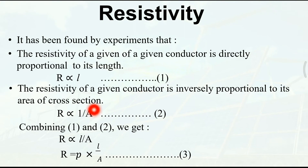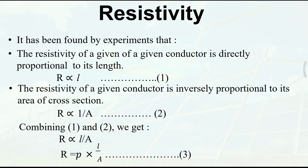R is proportional to L/A. अब proportional की sign हटेगी तो वहाँ पे ρ (rho) add किया जाता है। So R = ρ × L/A. This is the equation for resistivity, and that is equation 3.